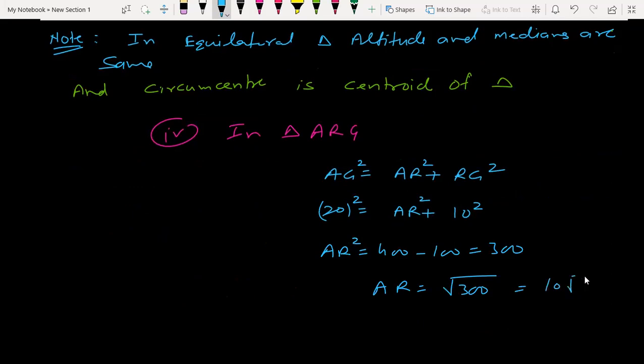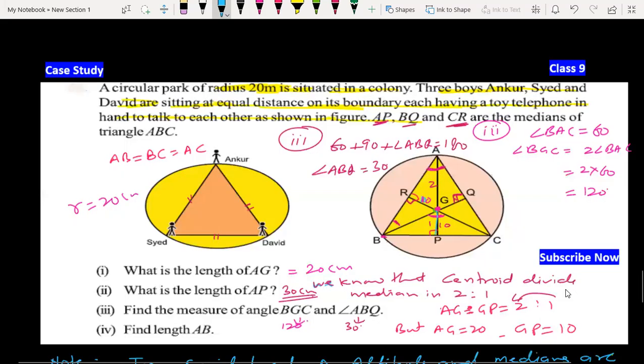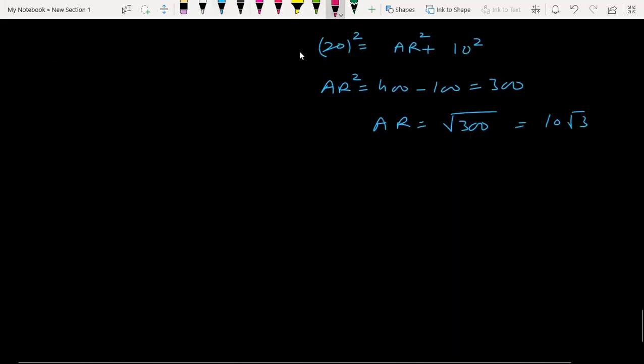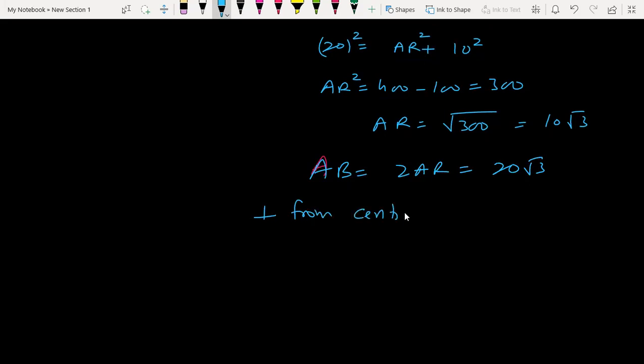Now one more property you should remember: perpendicular from center to the chord bisects the chord. This is how much AB is going to be? 2 into AR, which is 20 root 3. The reason is perpendicular from center to chord bisects the chord. So this is a very important question.